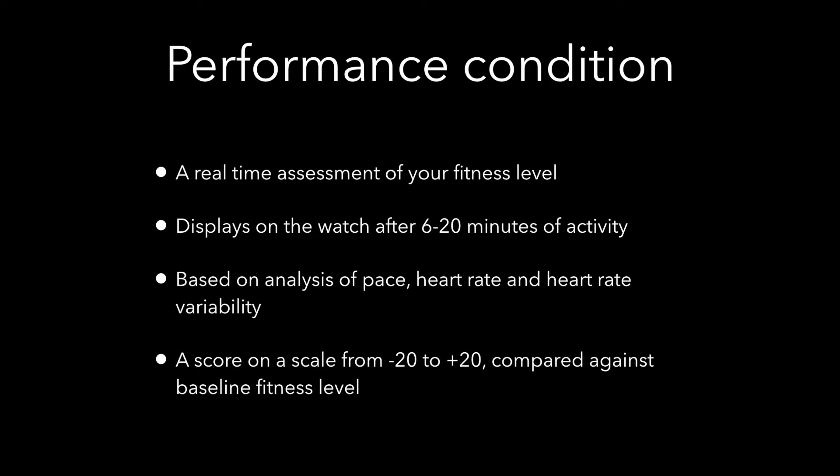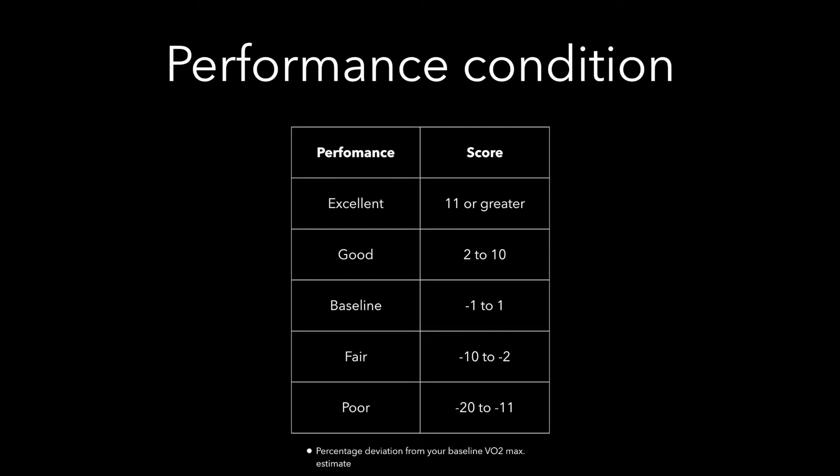For this indicator to work properly you need to have done some runs before it can give you some useful numbers. The watch needs to know how you would normally respond to changes in pace and how your heart rate normally is at certain paces. Garmin categorizes performance condition into five categories ranging from excellent to good to baseline to fair and to poor. Normally you would not see extreme numbers like excellent or poor, but more in the range of good, baseline or fair.